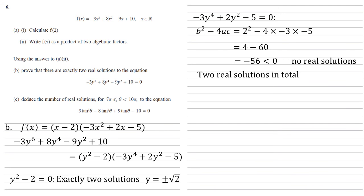f(x) has a solution at x equals 2, so this equation has a solution at tan θ equals 2. As we showed with the discriminant being less than zero, the bracket minus 3x squared plus 2x minus 5 has no real solutions, so there are no further solutions. For tan θ equals 2 with a range of theta that is 3π in size from 7π to 10π, there are exactly three solutions.